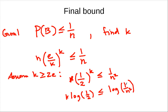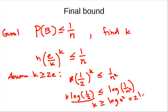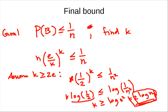So you get k at least log(n^2), which is 2 log n. So k has to be in the order of log n. If k is in the order of log n, this probability goes to 1/n. So this is our bound on the load on the maximum bin — the fullest bin.